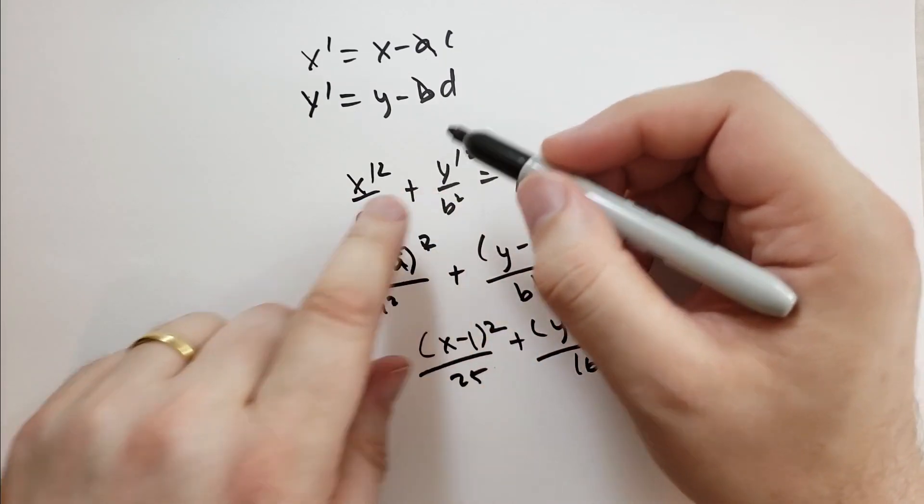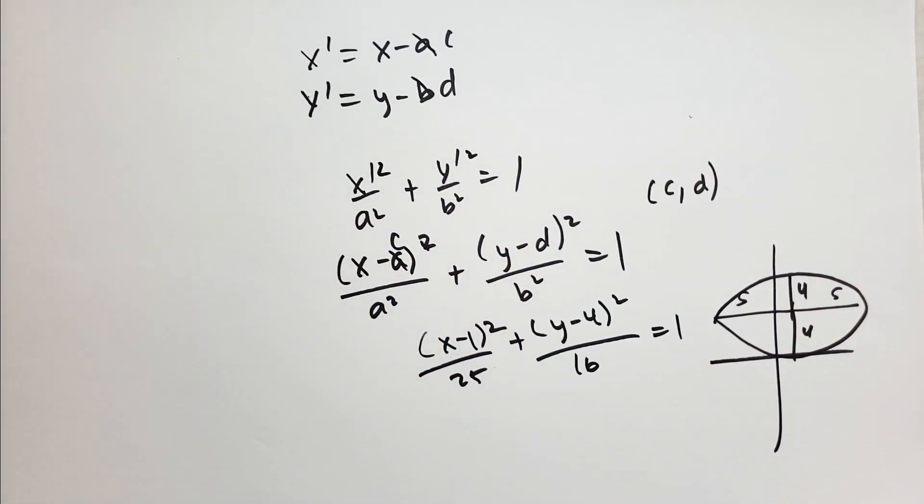X squared plus y squared. And you can have different coefficients for those. All right, guys. I hope you enjoyed this. Not much more to say about ellipses. Take care and bye-bye.